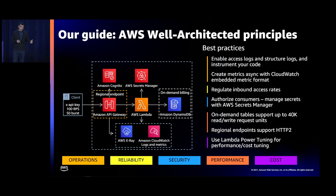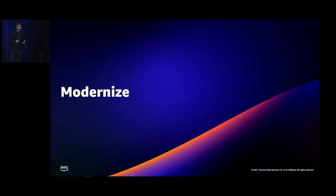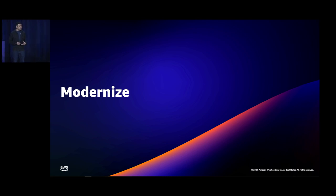Now that we have the foundational pieces in mind, the next step is to start modernizing. We'll get into the modernize phase, where there are many different industry patterns. We're going to talk about three such patterns and run a demo for one of them. Use these patterns — no need to reinvent the wheel — and apply them in an iterative manner, with value added at each step.